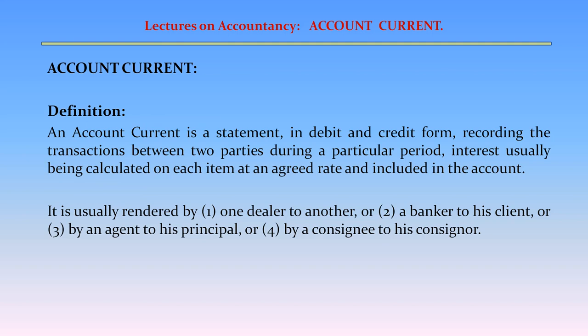An account current is a statement in debit and credit form regarding the transactions between two parties during a particular period, interest usually being calculated on each item at an agreed rate and included in the account. It is usually rendered by one dealer to another, or a banker to his client, or by an agent to his principal, or by a consignee to his consignor.